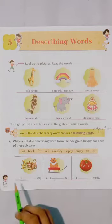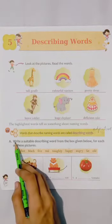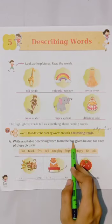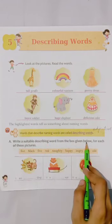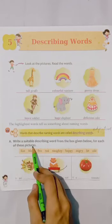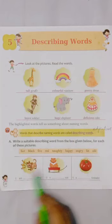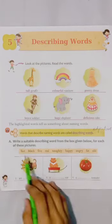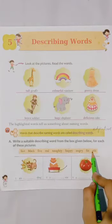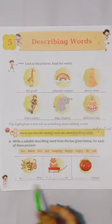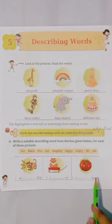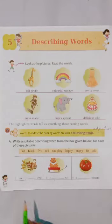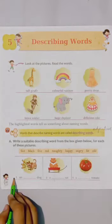Now come to Exercise A. Write a suitable describing word from the box given below for each of these pictures. As you can see, there are some pictures and some describing words in the box. We have to find out the correct describing word for each picture. Let's start.